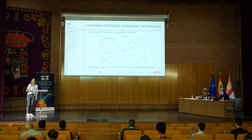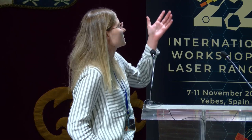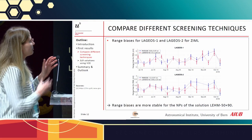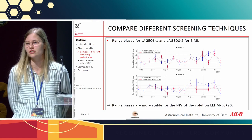As I said, we estimated the range biases. I think they are almost the same, but even with some differences, I would say that if we had a longer time span we could see whether we need to adapt the center of mass corrections.